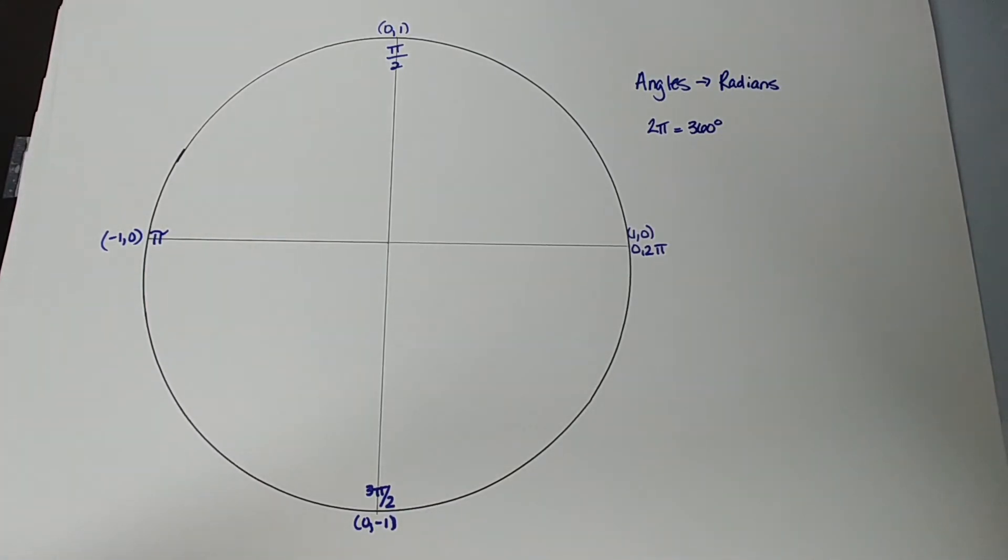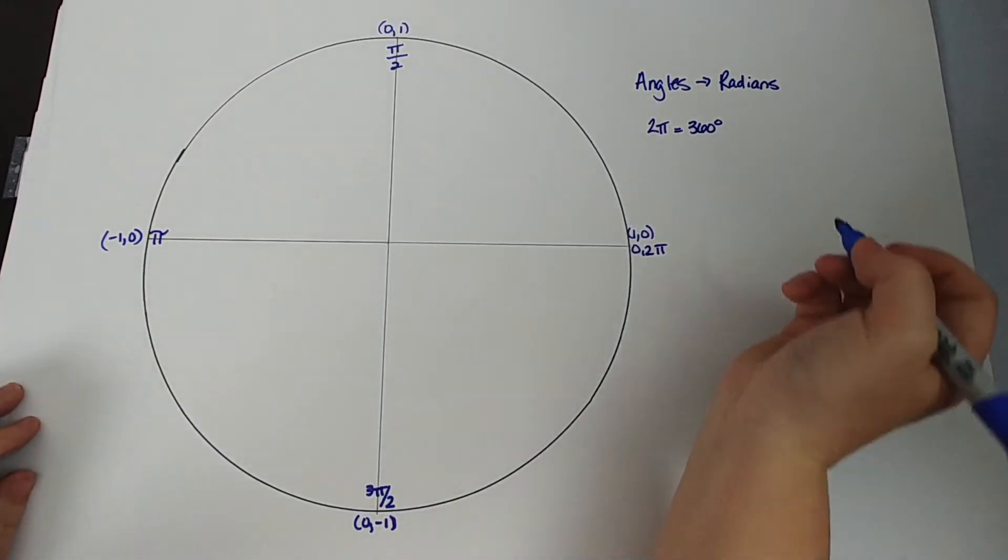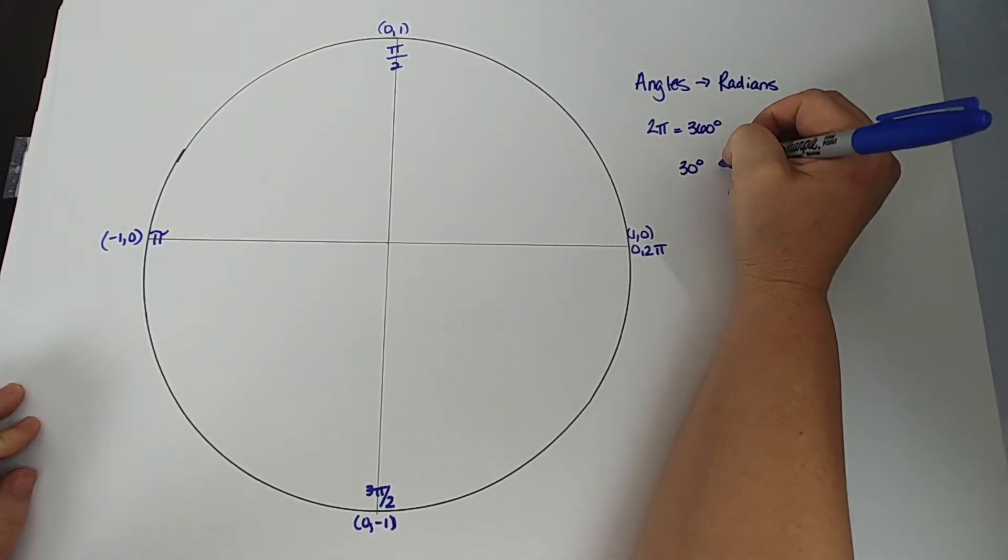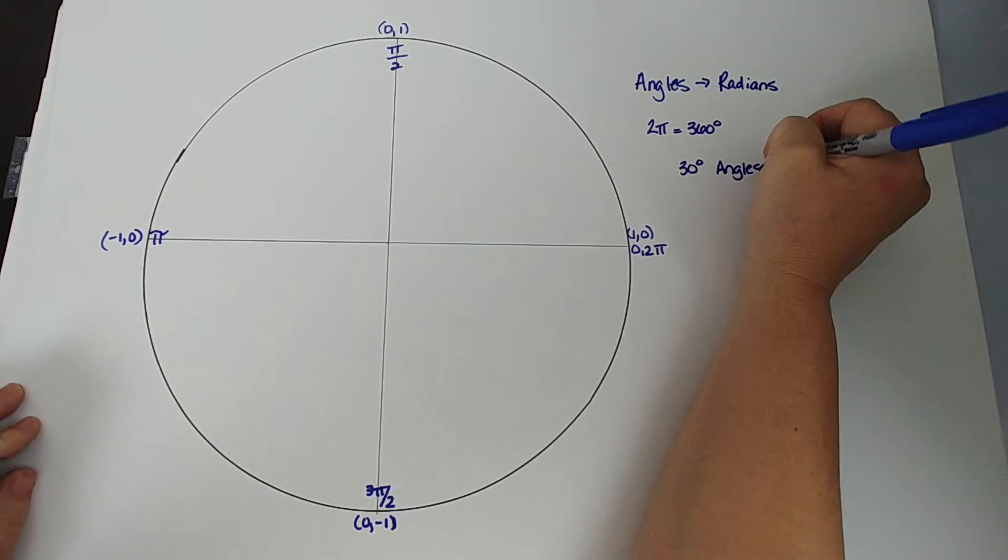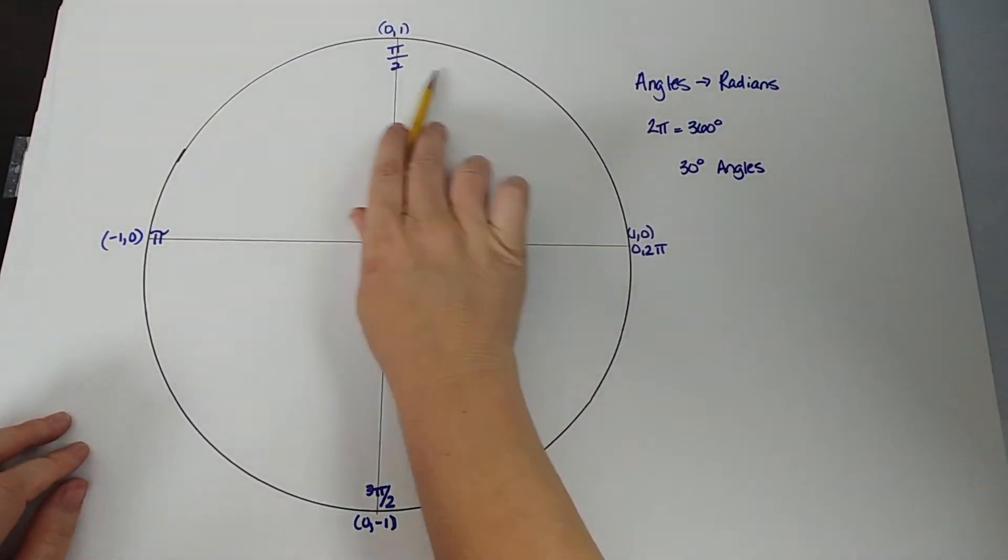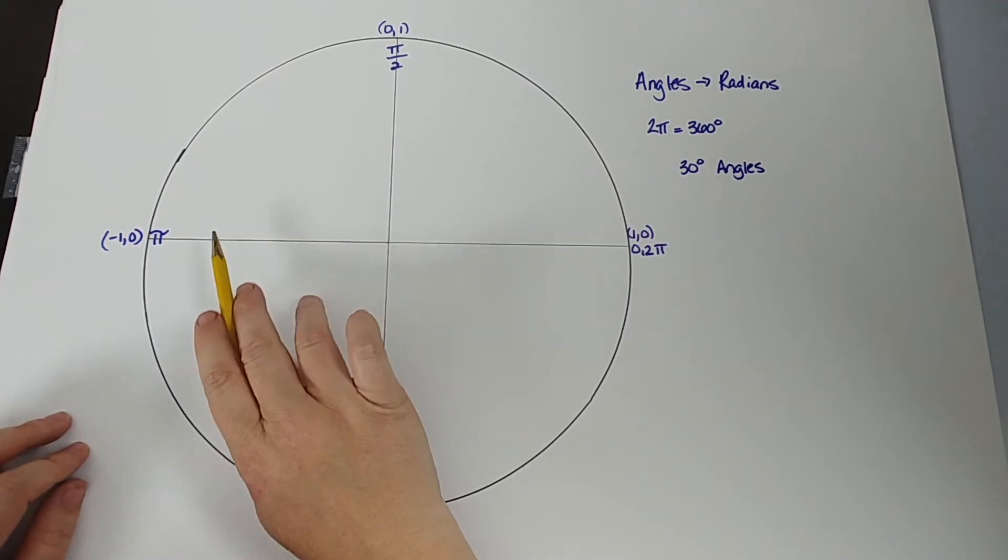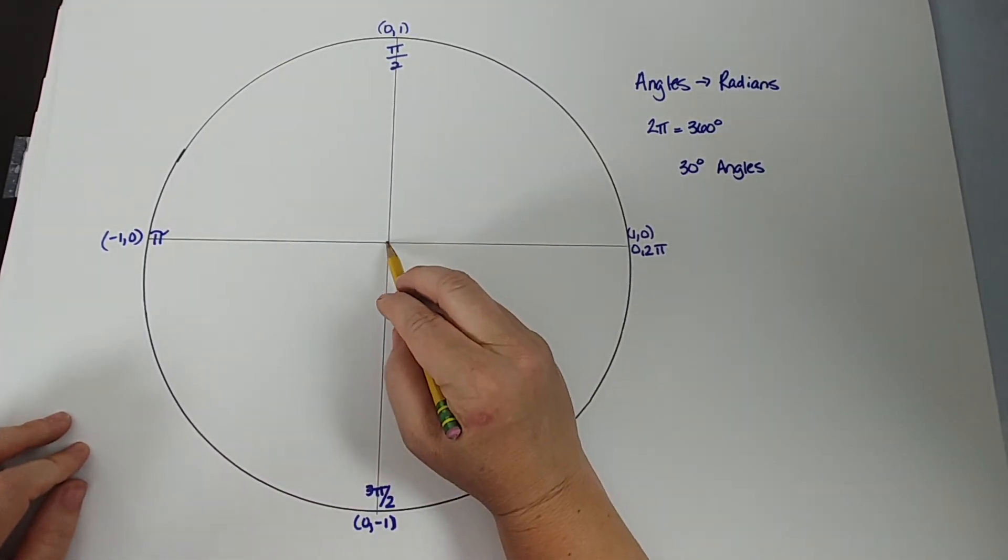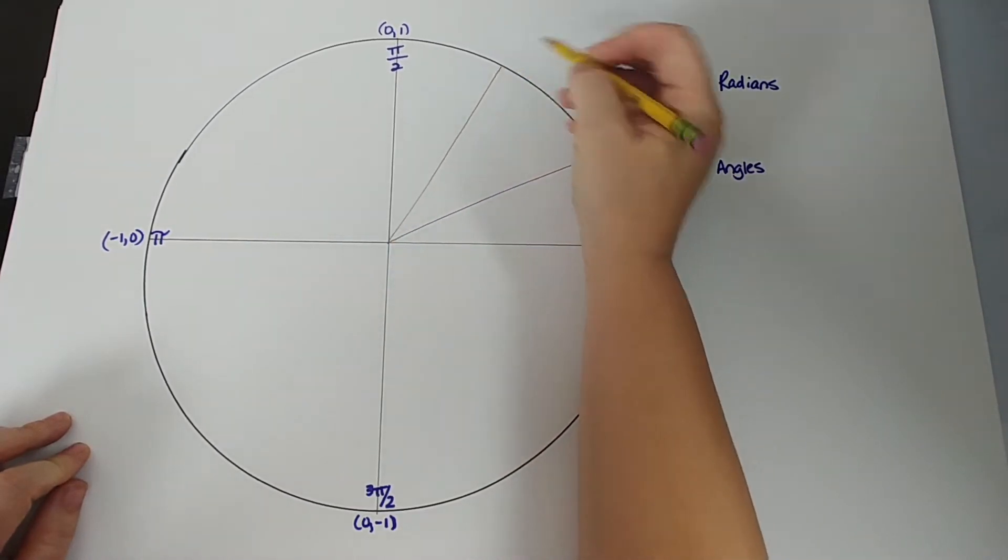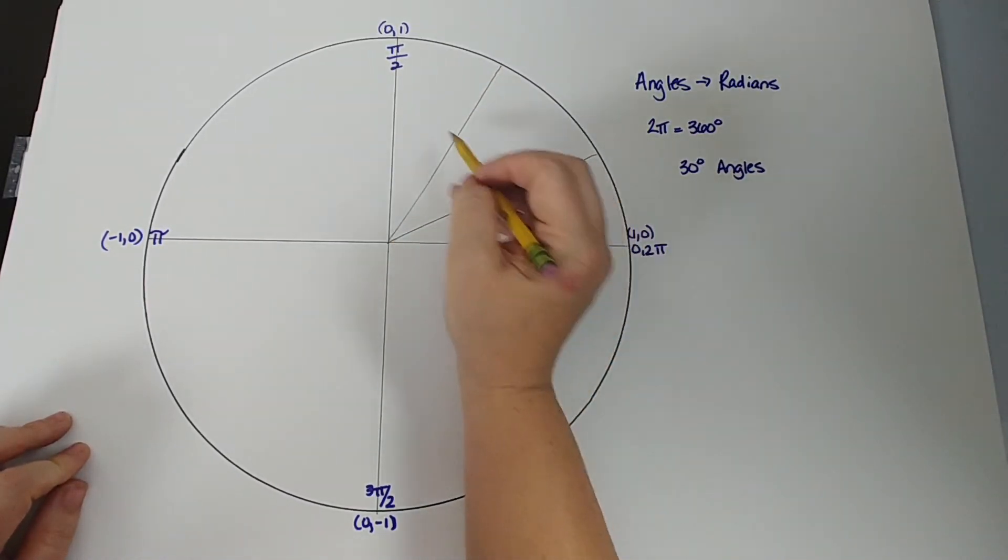We're going to assume that you know 90 degrees is π/2, that 180 degrees is π, and that 270 degrees is 3π/2. So the first thing we're going to tackle are the 30, 60, 90 degree angles. So let's tackle, we're going to call it the 30 degree angles. And I just use degrees and not radians because we think in degrees, we don't think in radians, but we will know the radians when we're done.